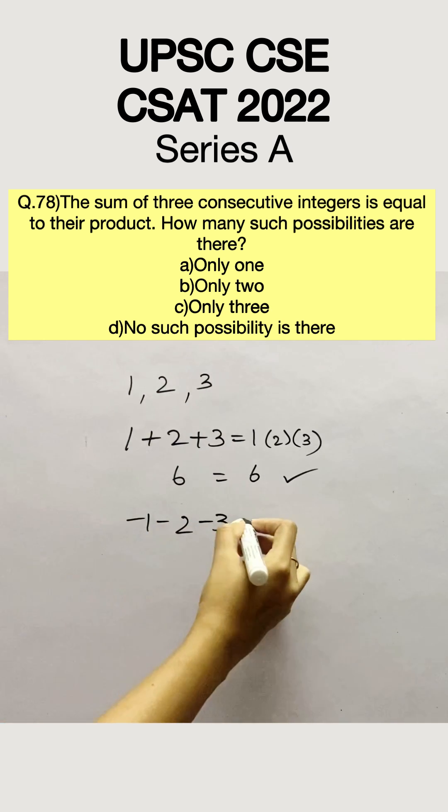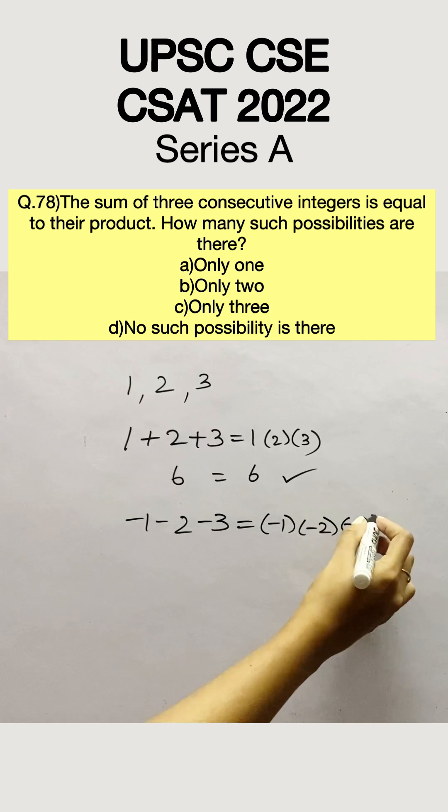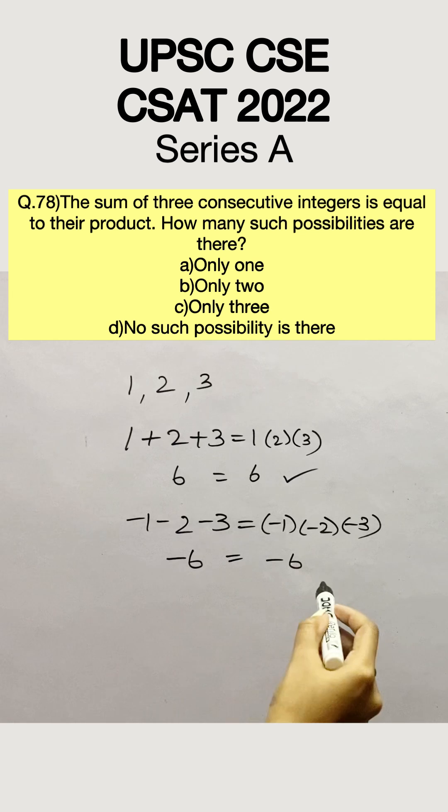We can take the same values but in negative. Minus 1, minus 2, minus 3 will also give us minus 6 in both sum and in product. So this also satisfies the condition.